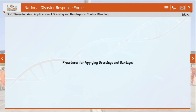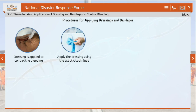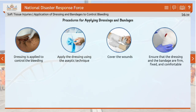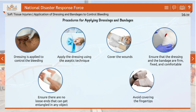Here are the procedures for applying dressings and bandages. Dressing is applied to control bleeding using the aseptic technique. Cover the wounds completely. Ensure that the dressing and bandage are firm, fixed and comfortable but not so tight as to affect circulation. Ensure there are no loose ends that can get entangled in any object. Lastly, avoid covering the fingertips.